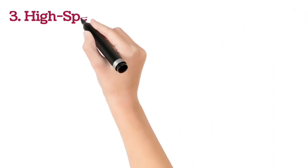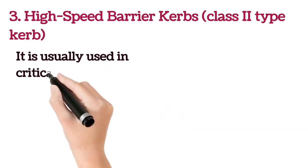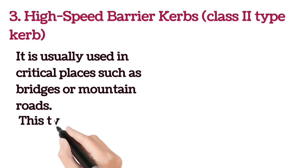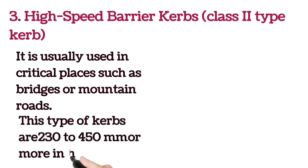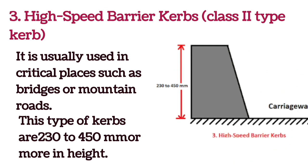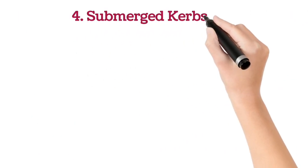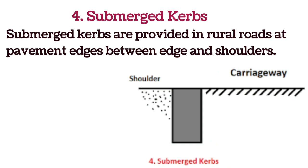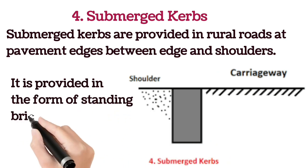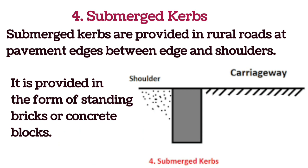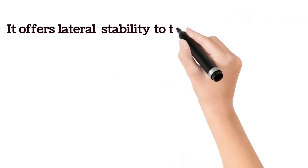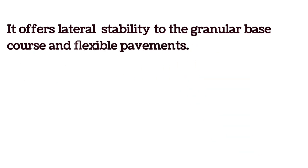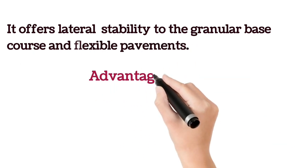The third type is high speed barrier curb or Class 3. It is usually used in critical places such as bridges or mountain roads, and is 230 to 450 mm or more in height. The fourth type is submerged curbs, which are provided in rural roads at pavement edges between edge and shoulder. They are provided in the form of standing bricks or concrete blocks and offer lateral stability to granular base course and flexible pavements.